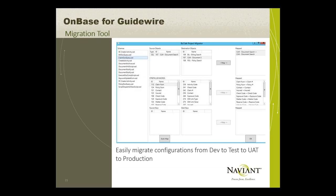Best practice dictates that every OnBase solution should have a minimum of test and production environments, and this is even more important when integrating with a large application like Guidewire. You don't want downtime in either system from changes made to the production system. To make the process easier, OnBase for Guidewire now features a migration tool designed to help customers move BizTalk Visual Studio projects between OnBase environments, greatly reducing time and effort involved.